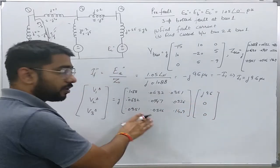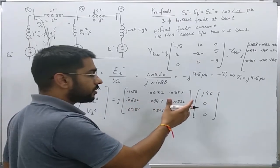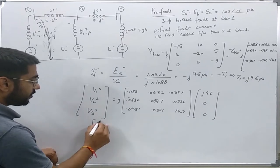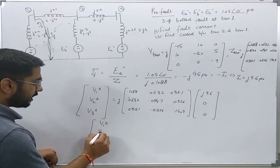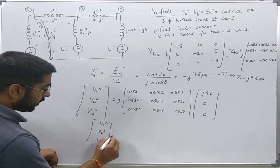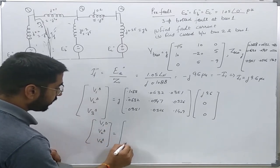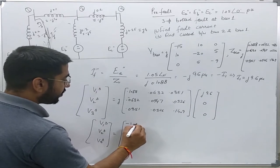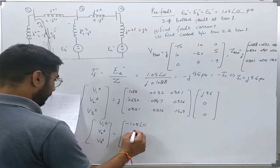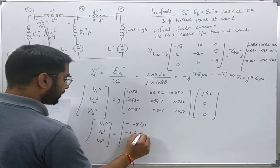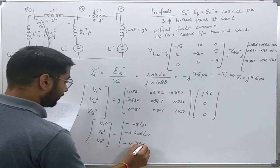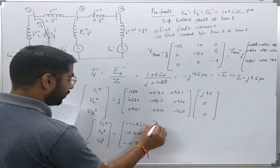Now solving this using a calculator, although without calculator also I can easily directly solve this, I will find that the change in voltages at various buses is given by: minus 1.05∠0°, minus 0.606∠0°, minus 0.337∠0°.